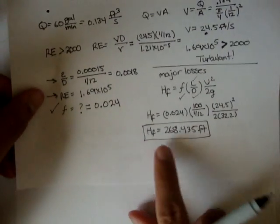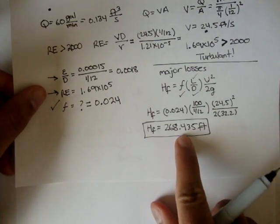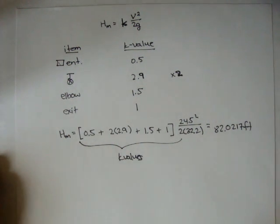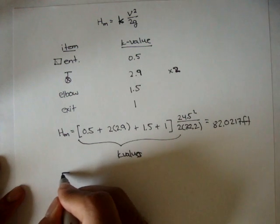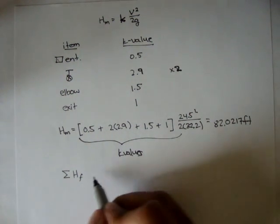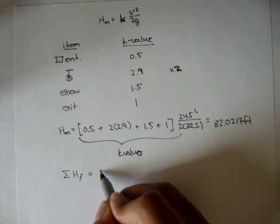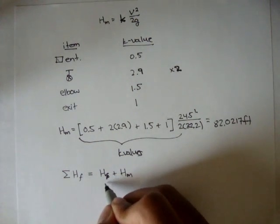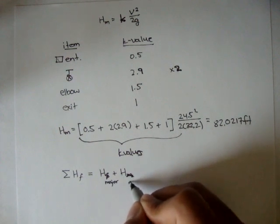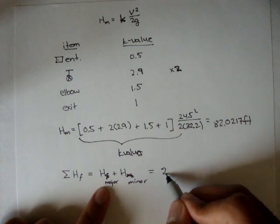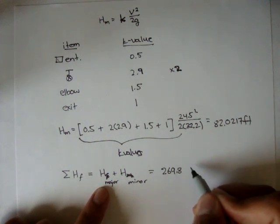Remember, our major losses was 268.435 feet. And now that we have the major and minor losses, we can say that the total frictional head losses is the major losses plus the minor losses.